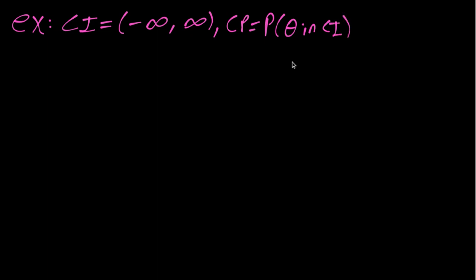Remember usually the confidence interval is based on the data, so from the before sampling perspective it's random. In this case, since we just ignore the data, it's not. So the probability that our theta is between negative infinity and infinity is just equal to one.